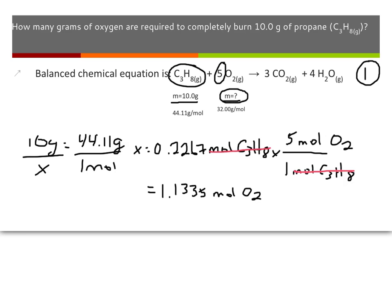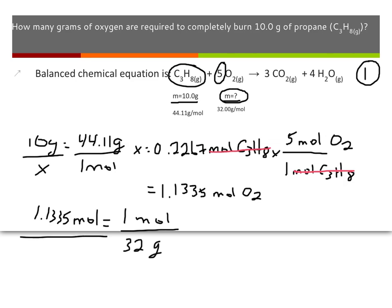My fourth step is to find my question mark — going from moles to grams of O₂. Using proportions, I have 1.1335 moles set equal to 1 mole per 32 grams, with X grams as the unknown. That means I take 1.1335 multiplied by 32, divided by 1, giving me 36.27. Looking back at my significant digits, I need 3, so my final answer is 36.3 grams.